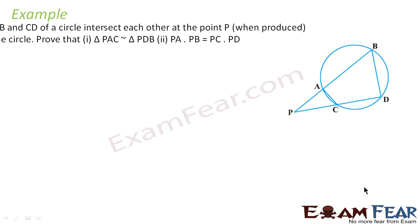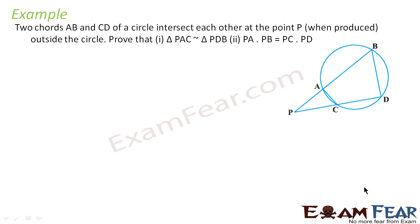We will take the last question. Two chords AB and CD of a circle intersect each other at point P when produced outside the circle. We have to prove that triangle PAC is similar to triangle PDB, and PA into PB is equal to PC into PD.